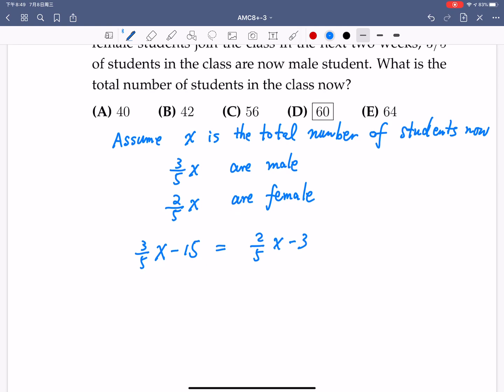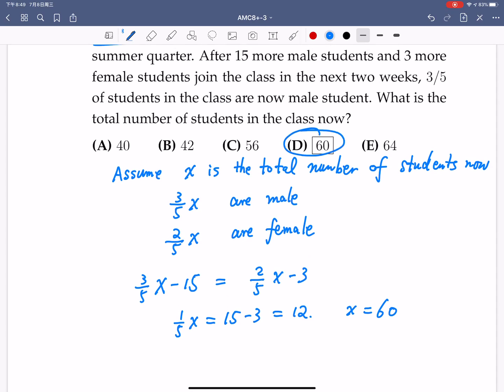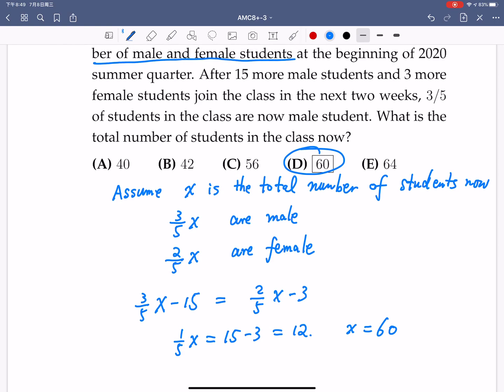So then we get the equation that three-fifths x minus 15 is equal to two-fifths x minus 3. If we move two-fifths x to the left-hand side, we would get one-fifth x equals 15 minus 3 is 12. So x is equal to 60. So the answer is D, 60, 60 students in the class now.